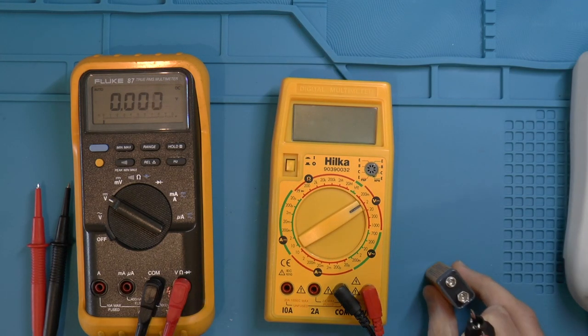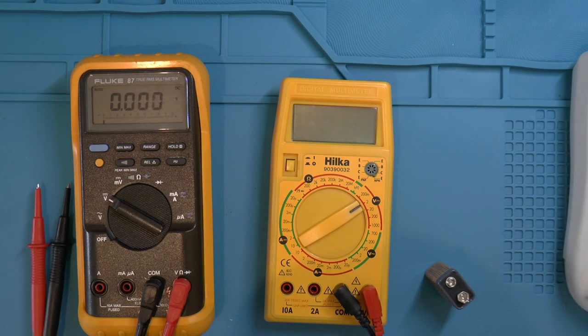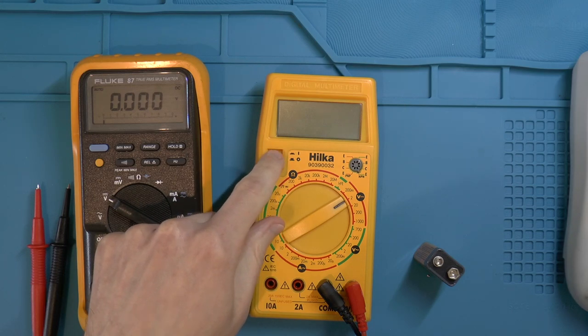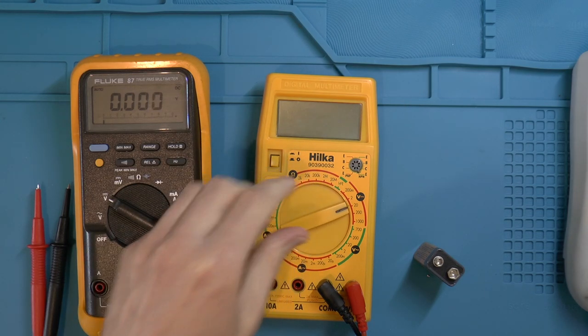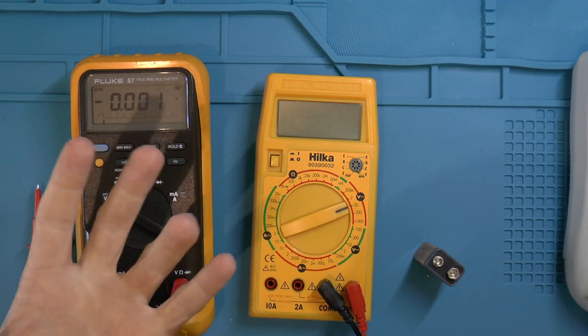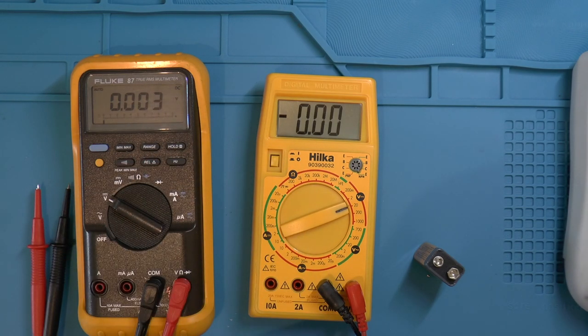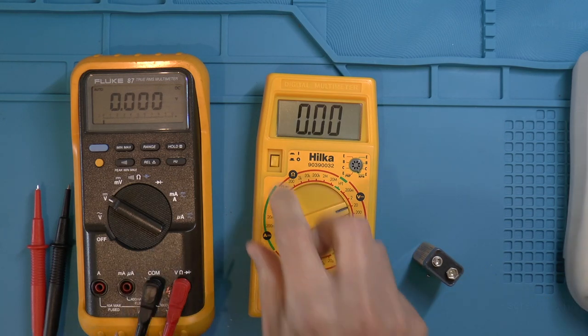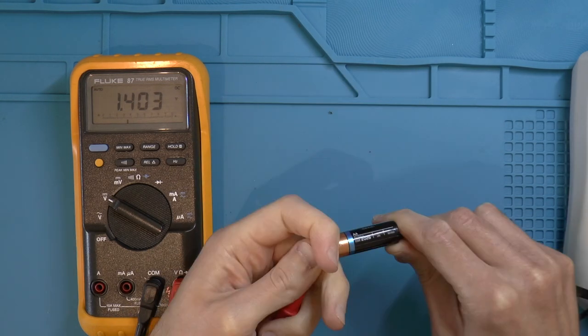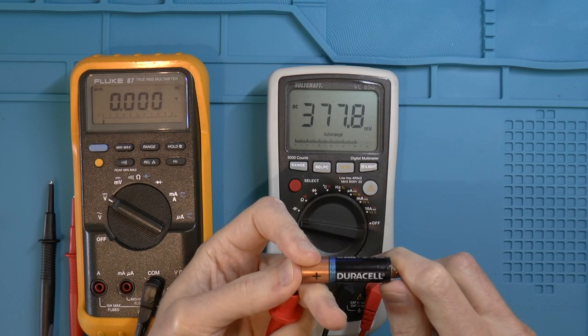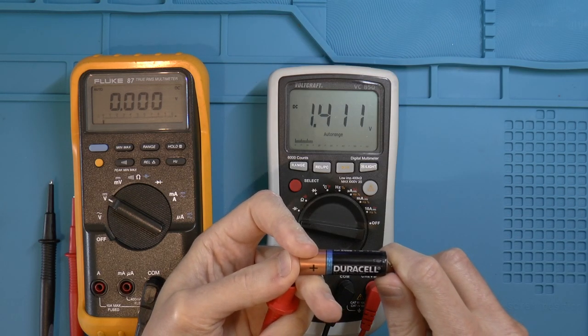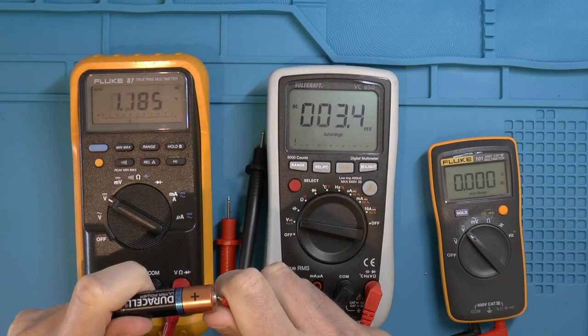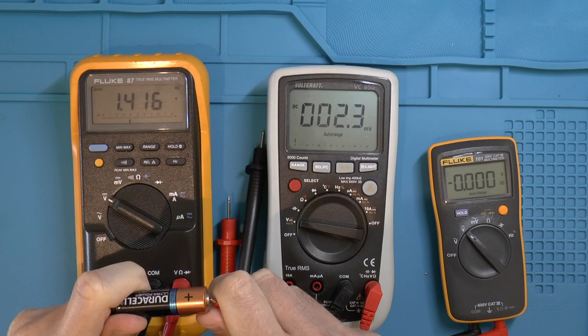This is my first ever multimeter, I got this in maybe 1990. The thing I like about this is it's got a separate on-off button so you can leave the range switch wherever you want it. 9.74, they all seem to be agreeing with each other. Okay, about 1.4. 1.41. It really may just be the test lead. Oh, now we're getting 1.41. Okay.